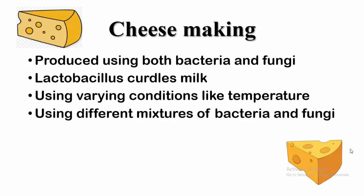Second is cheesemaking, produced using both bacteria and fungi. Lactobacillus is used to ferment milk sugar to lactic acid. Lactic acid curdles the milk protein. The curdled protein together with fats in the milk is removed and acted upon by a mixture of bacteria and fungi to produce cheese. By varying conditions such as temperature and using different mixtures of bacteria and fungi, different types of cheese can be produced.